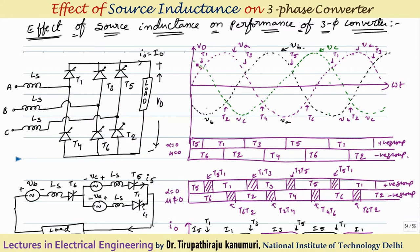For example, from the positive group, the thyristor whose anode is more positive with respect to its cathode — that is, whichever phase has the maximum positive value — will conduct. When Vc's waveform is followed by Va crossing Vc, thyristor T1 connected to Va becomes forward biased. At triggering angle alpha equal to 0, T1 is triggered and starts conducting. After this, when Vb exceeds Va, T3 connected to Vb is triggered. After 120 degrees T5 conducts, then T1 again — each thyristor in the positive group conducts for 120 degrees.